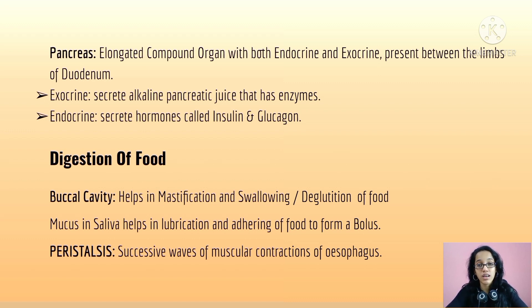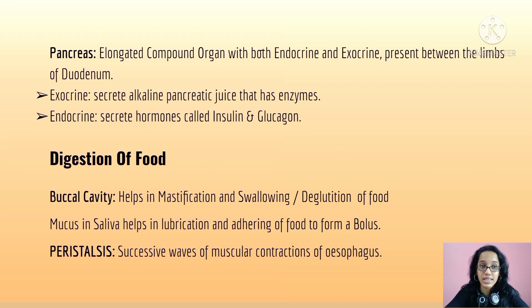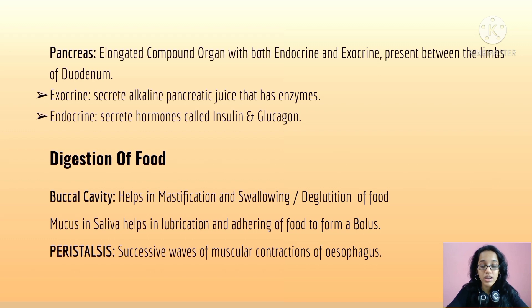The pancreas is an elongated compound organ because it has both endocrine and exocrine functions. It is present between the limbs of the duodenum. The exocrine part of the pancreas secretes the alkaline pancreatic juice containing enzymes, and the endocrine part secretes the hormones insulin and glucagon.